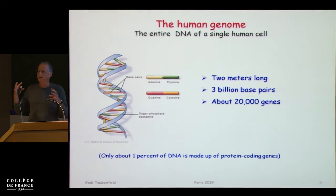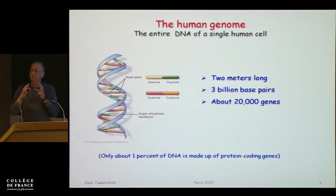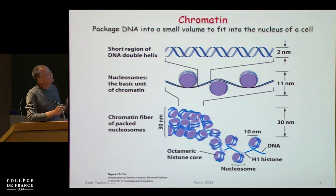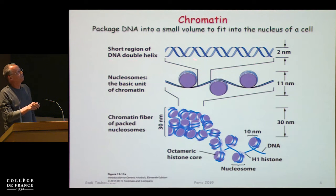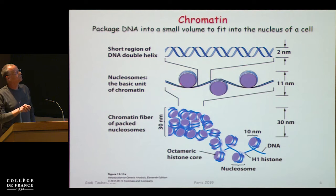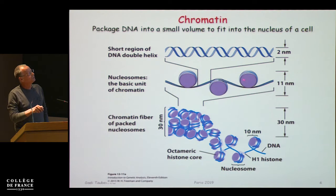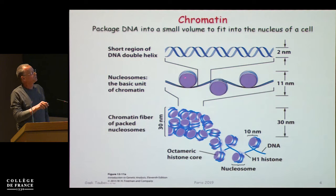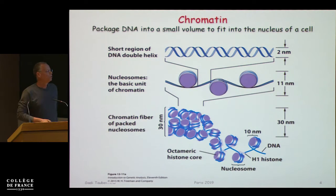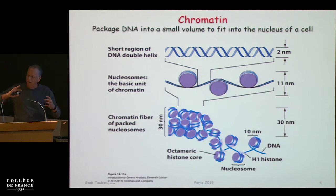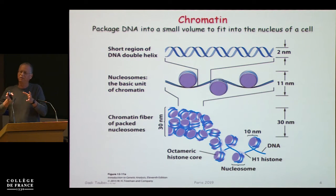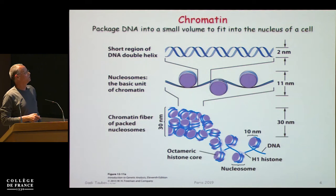How do you take two meters and condense it into the nucleus of a single cell? You take the double helix DNA and wrap it around a protein called a histone — about 200 base pairs around each histone. Then you put the histones together to get what is called the chromatin fiber, condense it even more, and it fits into the nucleus of a single cell.